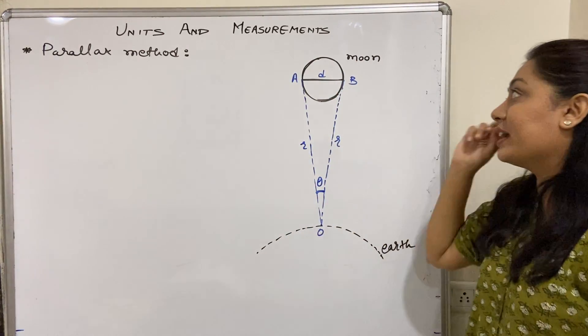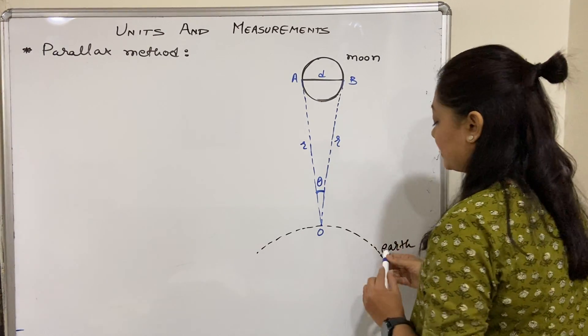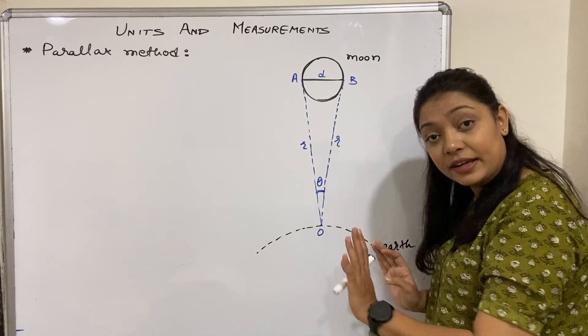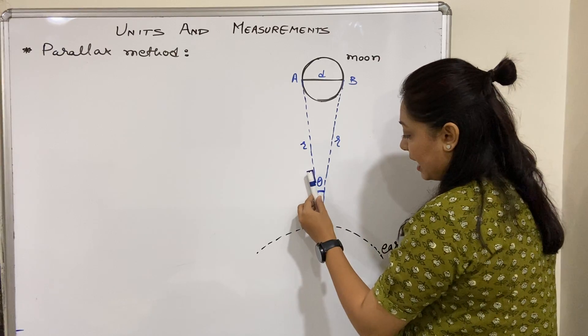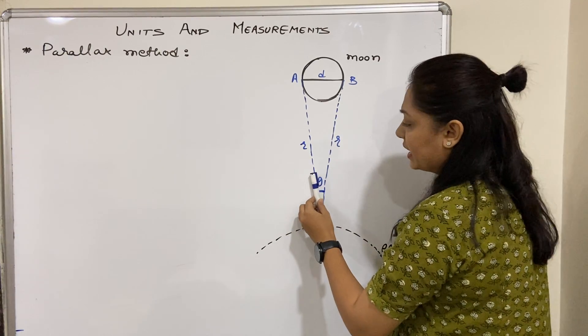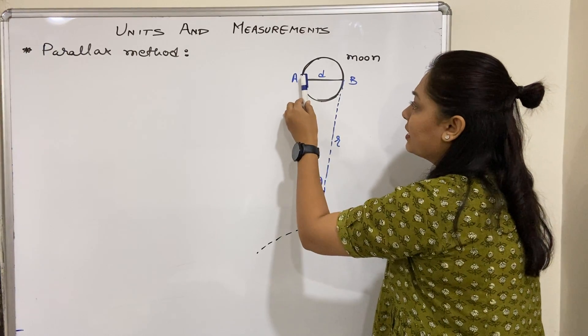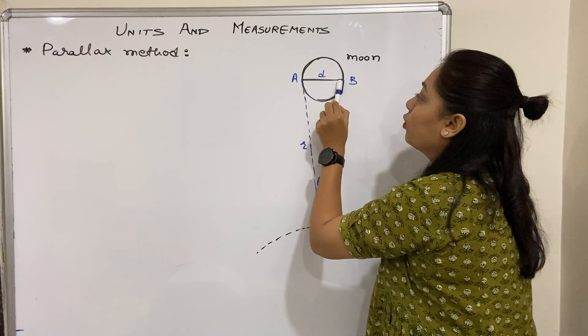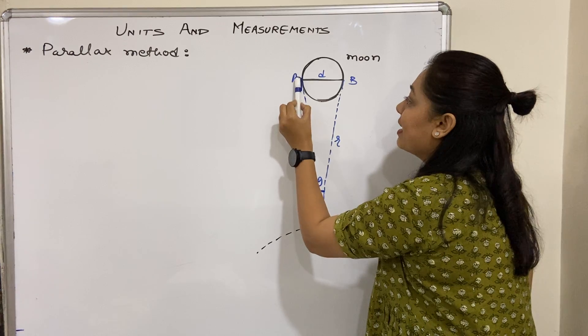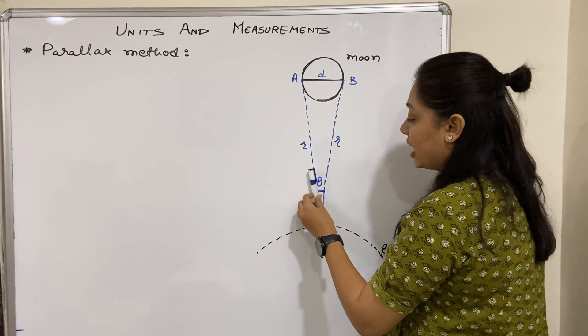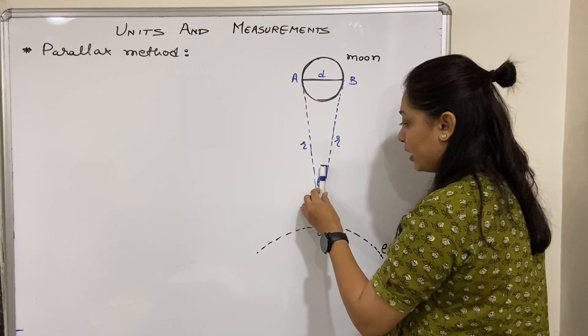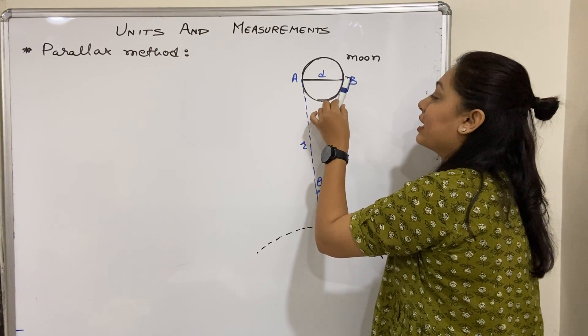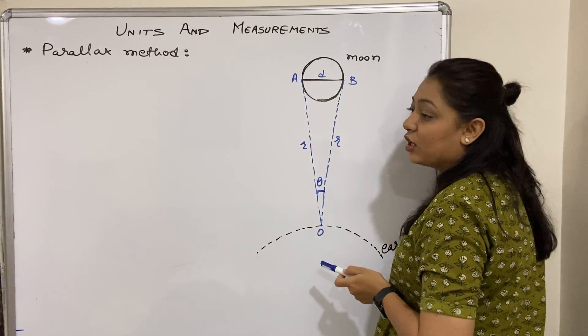Now we are going to find out the diameter of the moon. We place a telescope and point it in the angle or direction towards point A, which is at the left corner of the moon's diameter. Then we take the telescope and go to the exact opposite edge, the exactly opposite point of the moon.